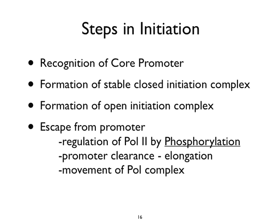First, by formation of a stable closed initiation complex that locks the polymerase in place on the DNA template. Then you form an open initiation complex — just like DNA replication, you have a helix to open. In order to generate transcripts, you've got to read through the DNA. After you generate this initiation complex, the polymerase escapes from the promoter and begins to move downstream because of a physical change — phosphorylation of its carboxy terminus. Once promoter clearance is obtained, the molecules elongate and you get movement of the polymerase complex. This is different from DNA replication, where the complex stays.